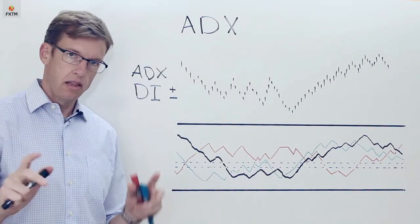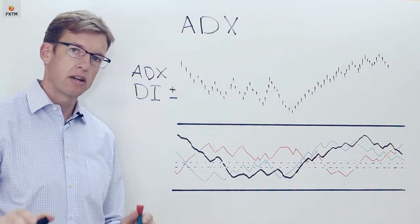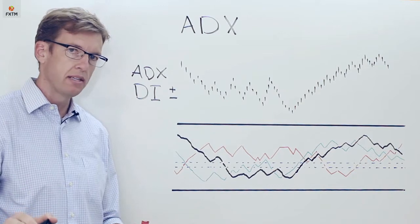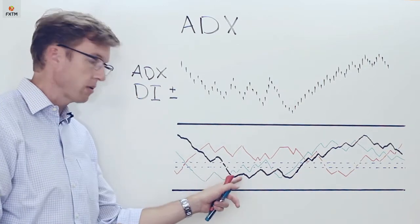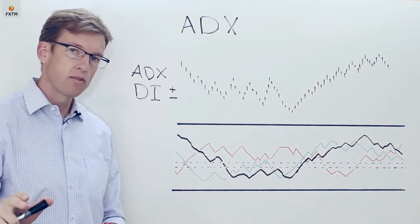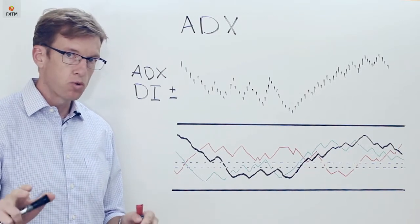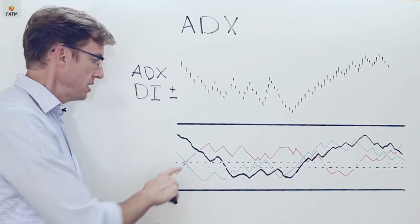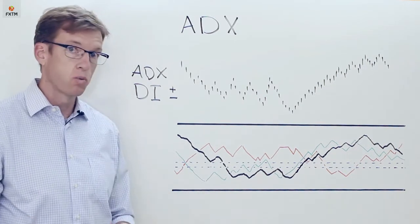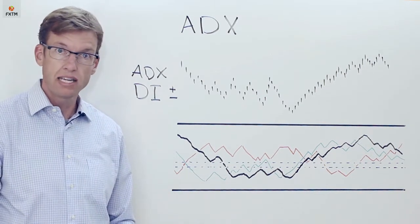Now what the lines are basically telling us is that they're evaluating the strength of the trend. That's the ADX line, which is the black one here. It's telling us the strength of the trend independent of which direction the trend is actually going, and then the directional indicators tell us which direction the trend is in fact heading.